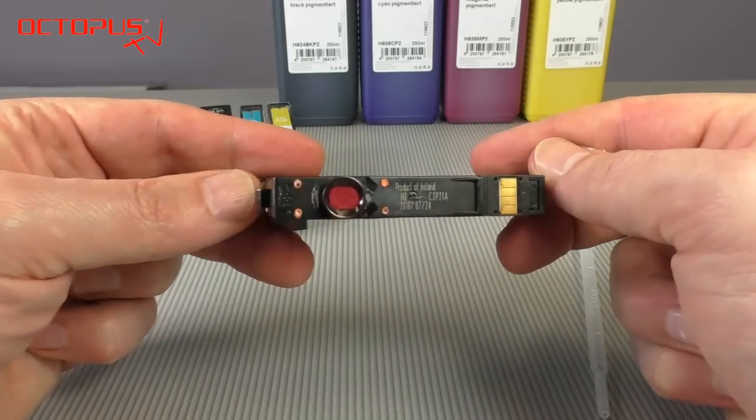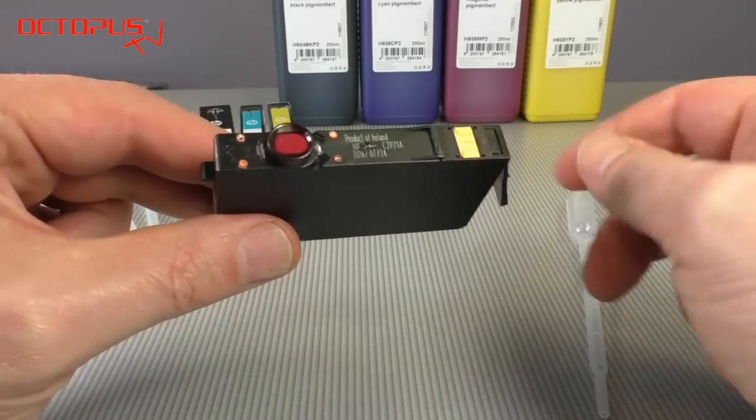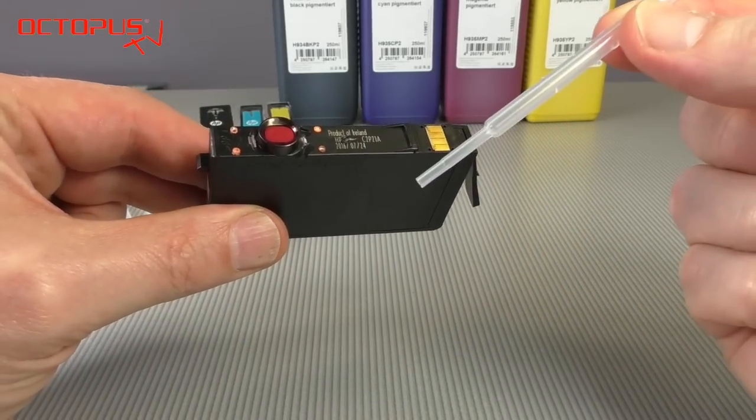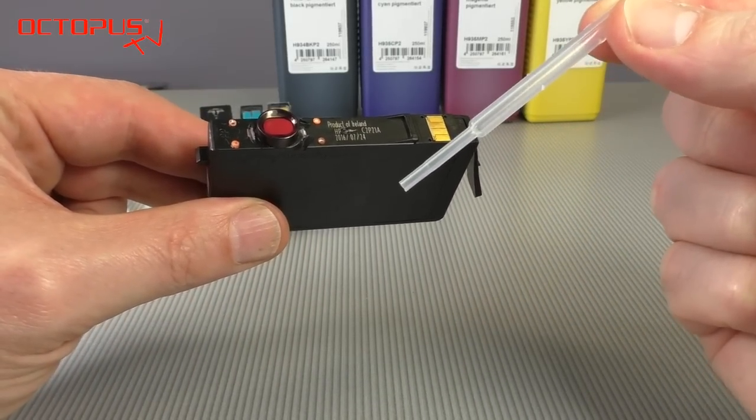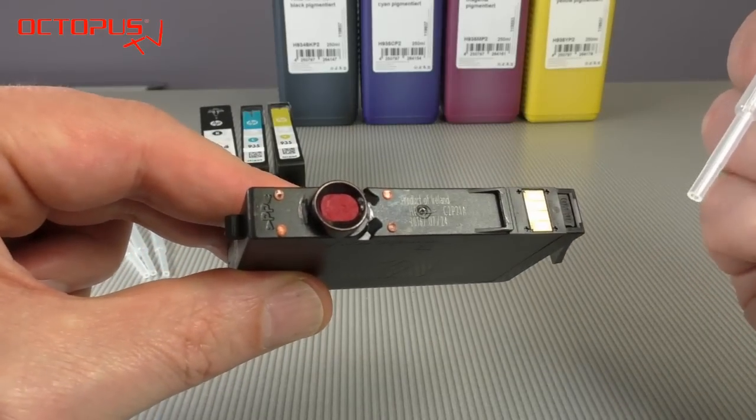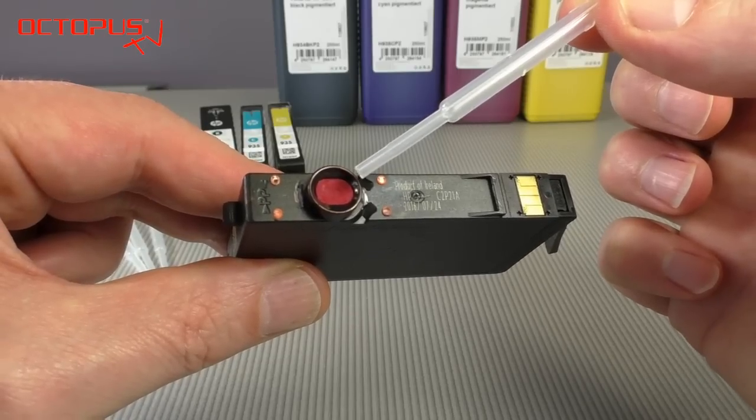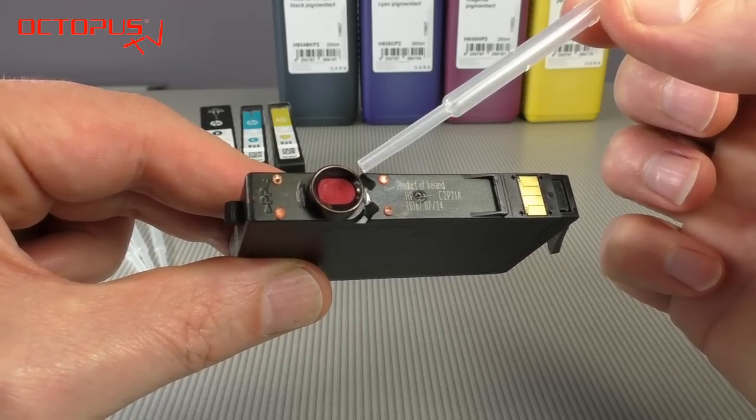Basically there are a couple of options that you have to refill this cartridge but due to some characteristics of it we have chosen the way you will see here. In our tutorial we are going to use a pipette to drip the refill ink on the sponge material in the cartridge directly.